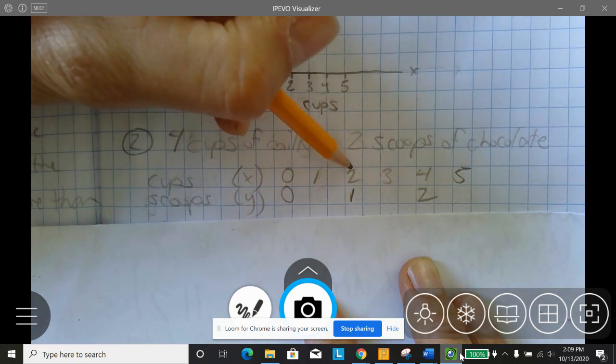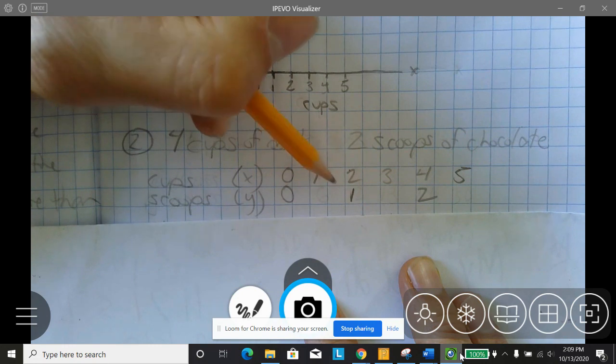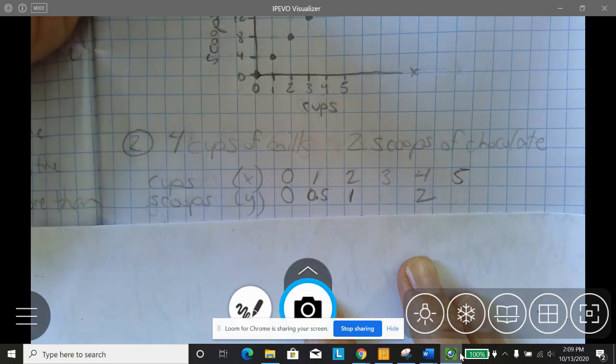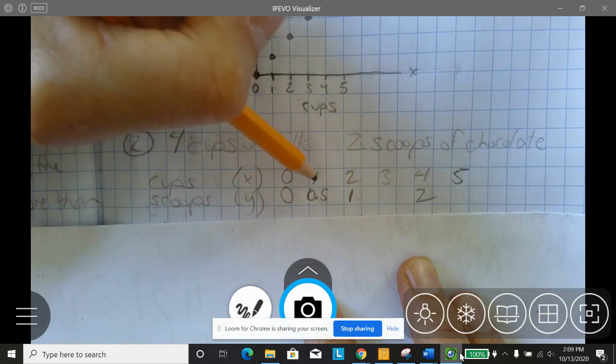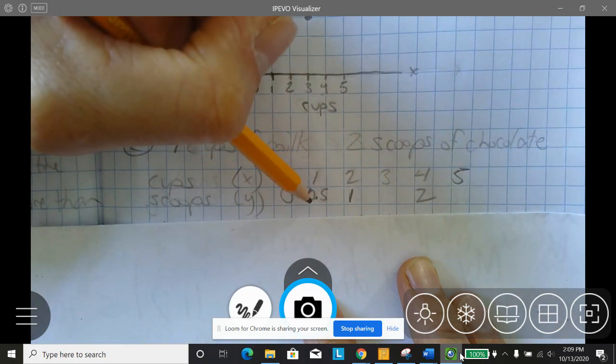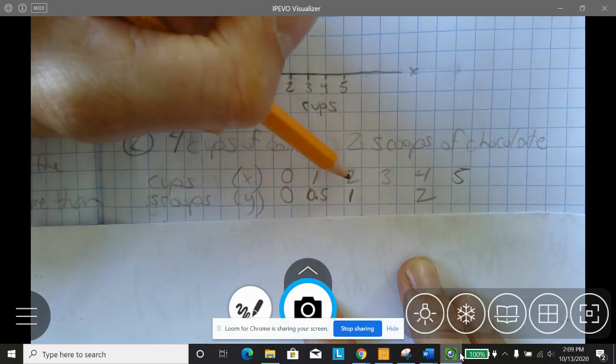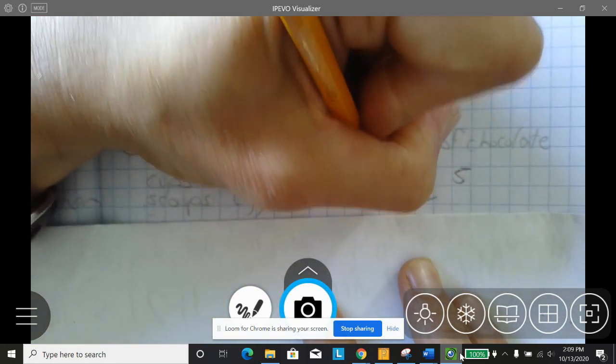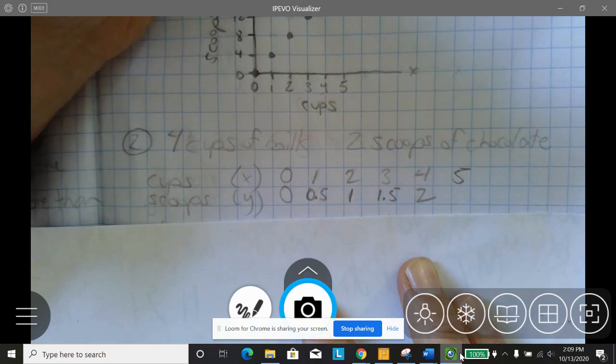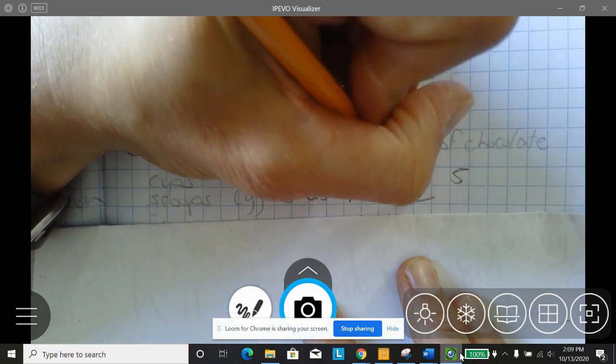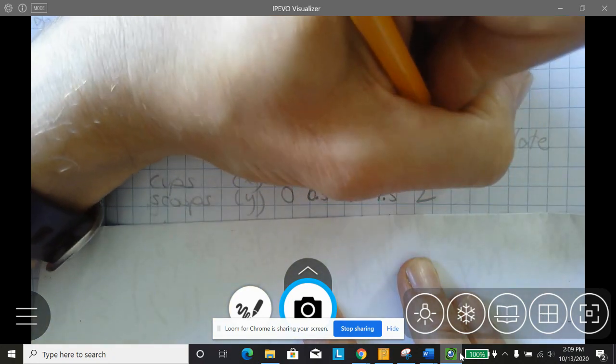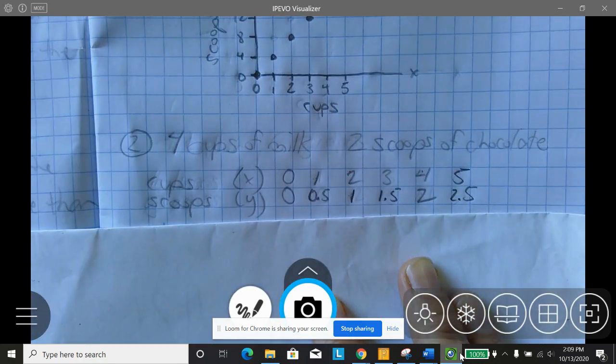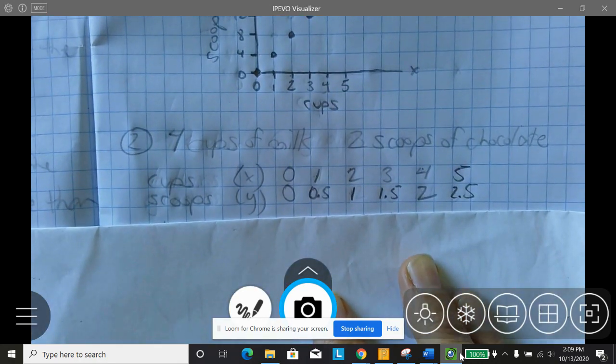Now, hopefully, I can see a pattern. If I take half of two, I should take half of one, which is 0.5. So it looks like for every one cup, I need a half a scoop. So two cups give me a whole scoop. Three cups, I should need 1.5. Four scoops gets me two, and five cups should get me 2.5 scoops. So you can see it's a different situation.